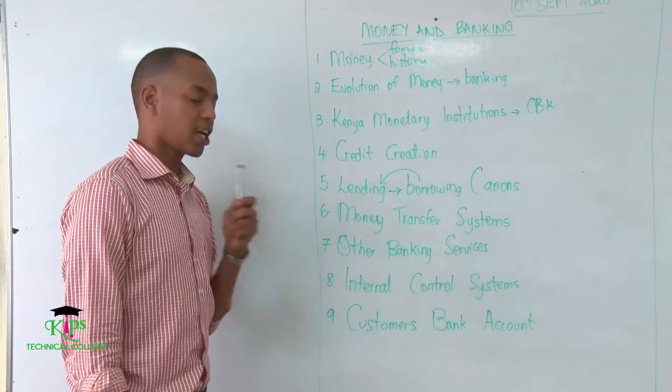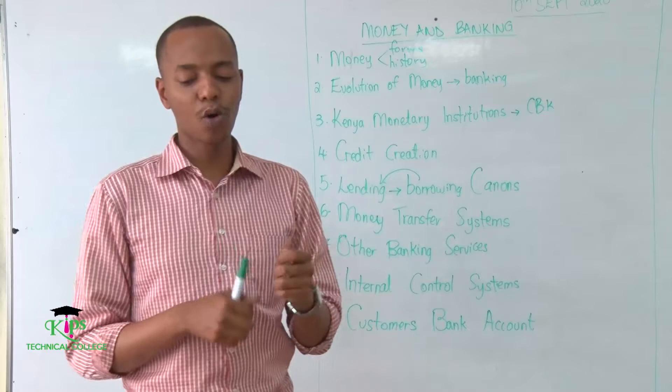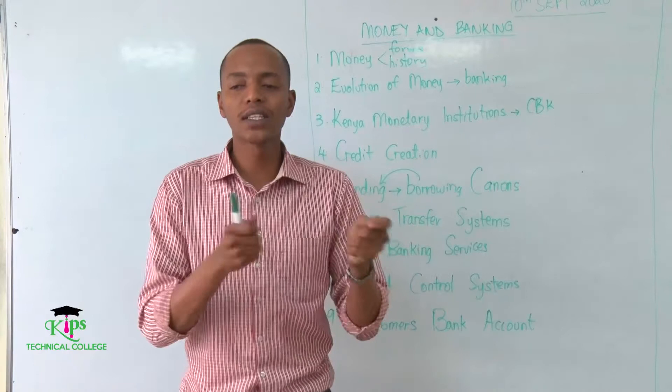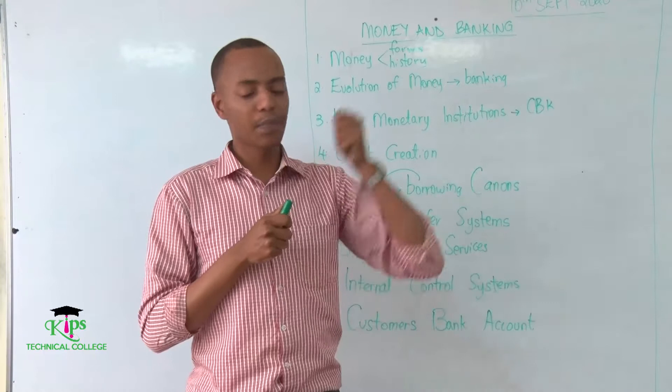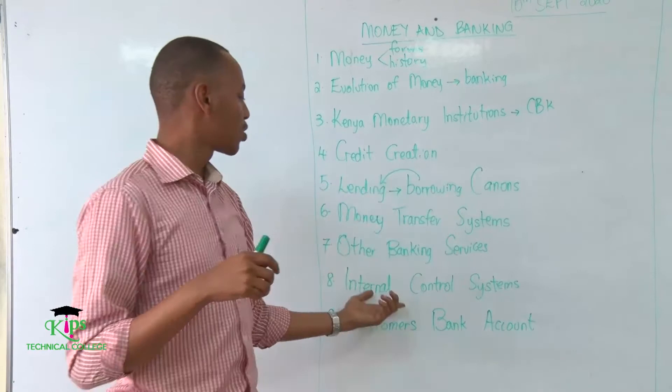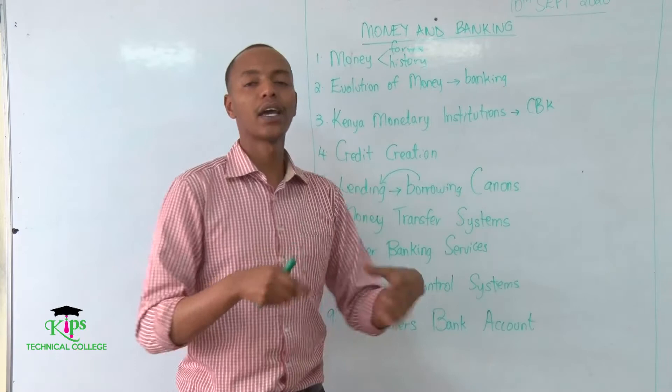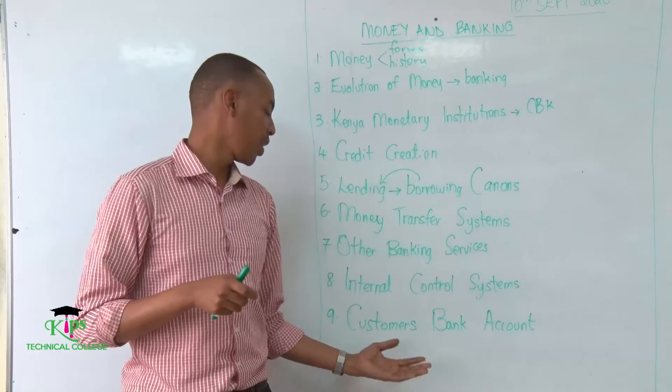Then we'll talk about other banking services. Here we'll cover the checking system — how people pay internationally — including checks, letters of credit, traveller's checks, and so on. We'll also look at the internal control system. A bank needs to know how it will transact its goods and services to generate revenue, and it must avoid situations where bank members themselves are taking loans from the bank for personal use. So the bank has to maintain a solid internal control system.